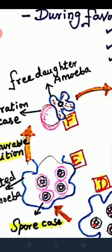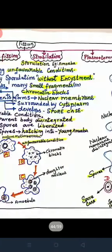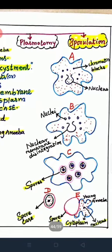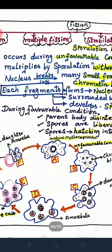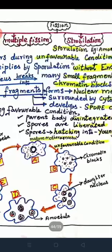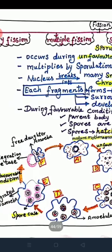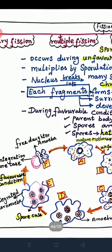In the textbook diagram, the sporulation cycle is shown. During unfavorable conditions, the parent amoeba nucleus breaks into chromatin blocks, forms a nuclear membrane, becomes surrounded by cytoplasm, and is then enclosed by a spore case — the pink-colored part in the diagram. During favorable conditions, the parental body disintegrates and liberates spores, which hatch and form new amoeba.